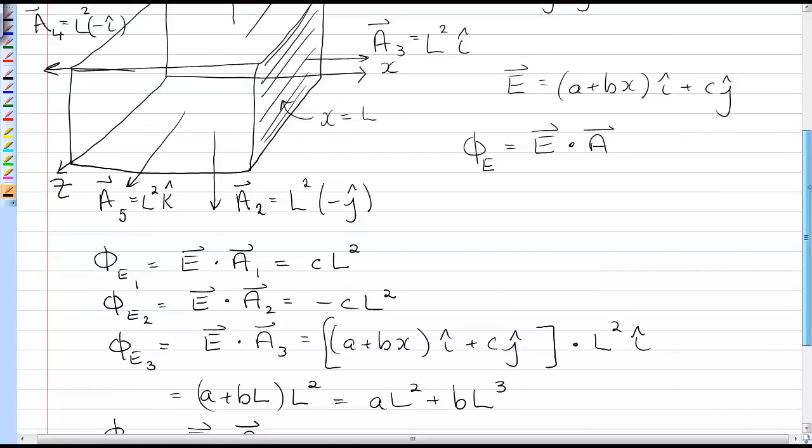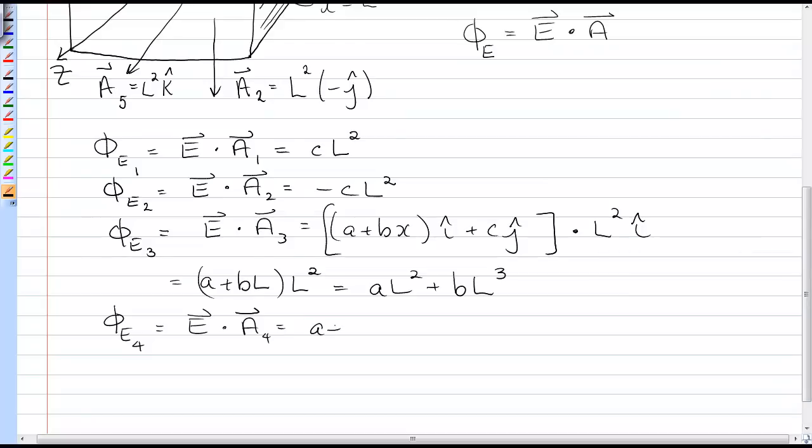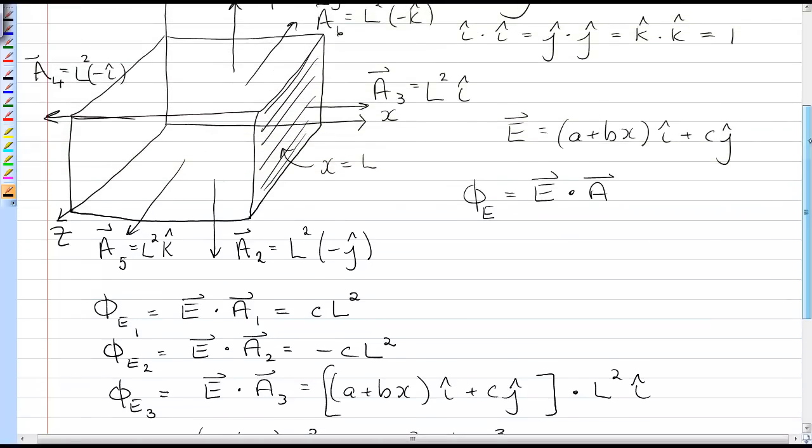A4 is L negative i-hat, so that's what I'm going to have here. Here I'm going to have (a + bx) times negative L squared. But once again, I need to evaluate x on that face. So up here on face 4, x equals 0.